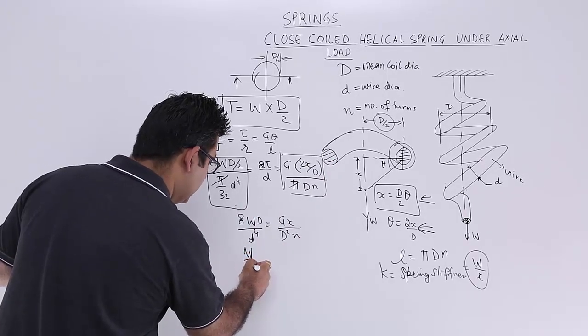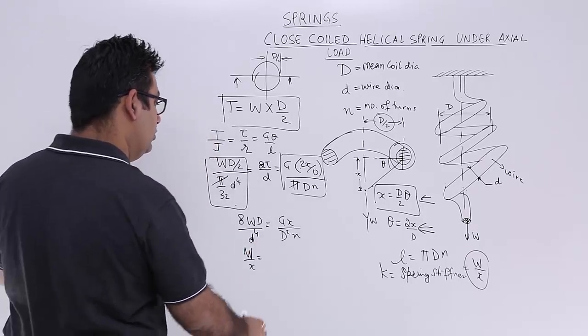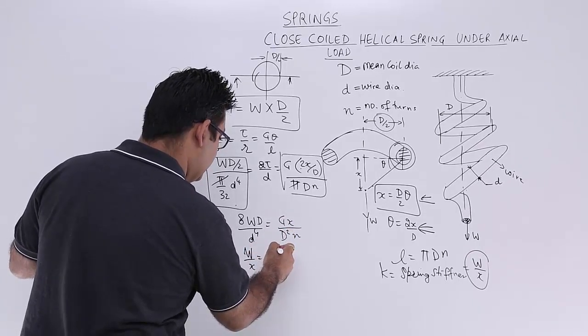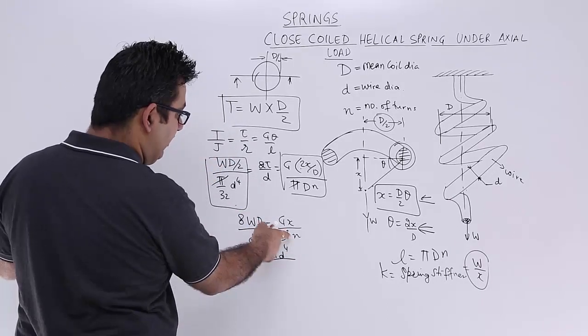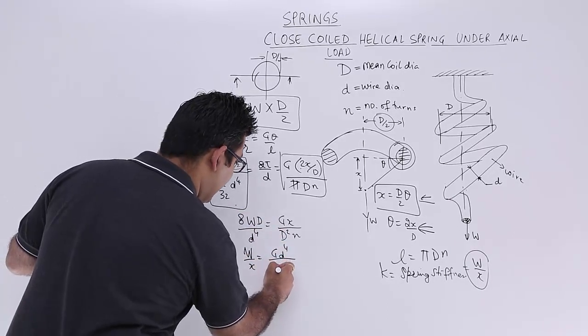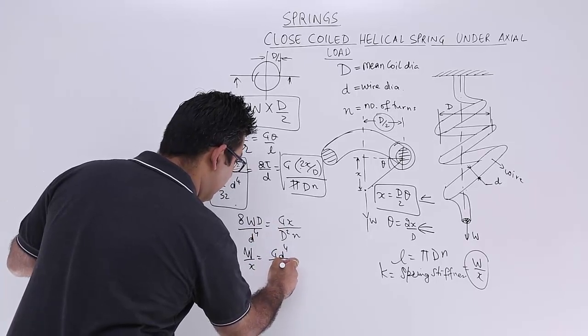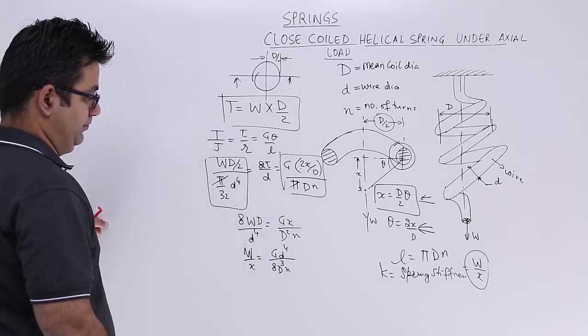So W upon X is equal to this is G into d to the power 4. This 8 into D will come down. So you will have 8 into D cube into N.